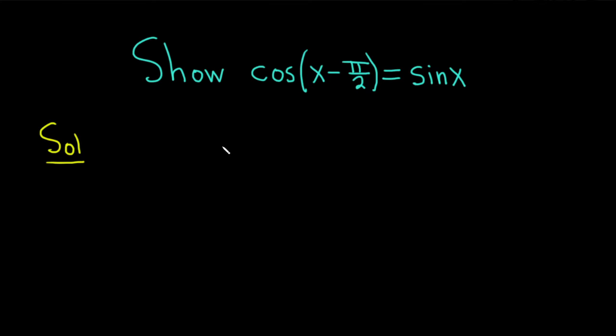We'll start by writing down the identity that we're going to use in order to solve this problem. The identity is the following. If you have the cosine of a minus b,